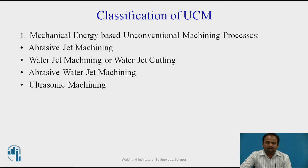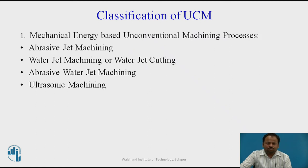The classification of unconventional machining processes: the first category is mechanical energy based processes. Here the medium is abrasive — abrasive jet machining uses carbide powder or silicon carbide as abrasive. Next is water jet machining, also called water jet cutting, which uses high water pressure mixed with abrasive forcefully applied on the material to cut it. Abrasive water jet machining is a combination of both. The third is ultrasonic machining, which makes use of a high-frequency ultrasonic tool.